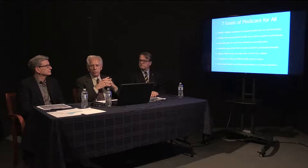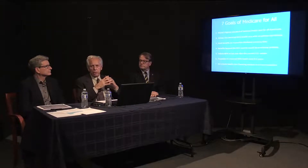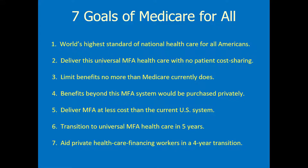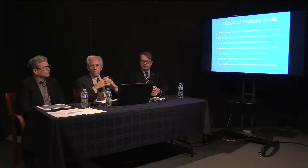We're not going to claim we're going to do highly better than we're doing now. Because of the fact that we want to deliver this standard with no cost sharing, it's a very high standard of care and therefore it's going to cost more than some other countries do, but not as much as the current system. Number six, transition to universal Medicare for All healthcare in five years — we have a plan to show how that would work. Finally, number seven, we want to aid private healthcare financing workers in a four-year transition. Those are the seven goals.